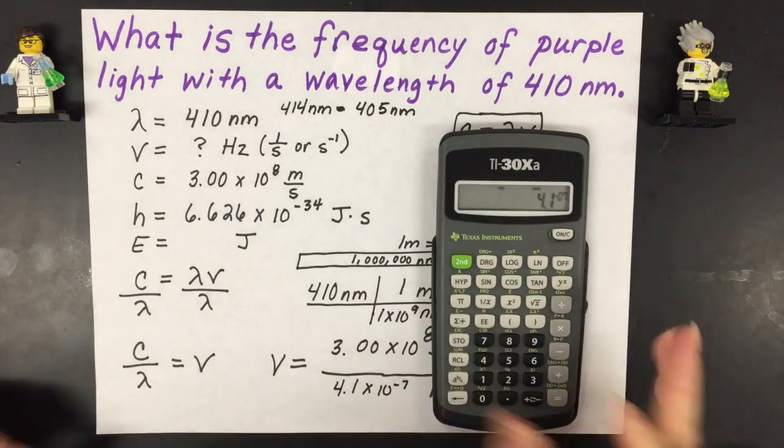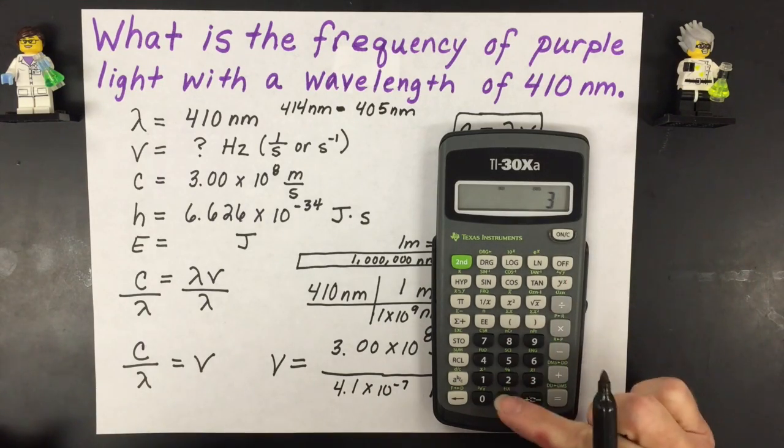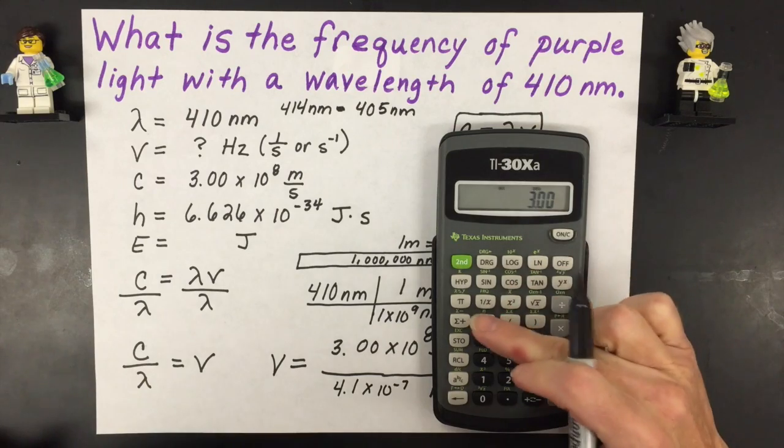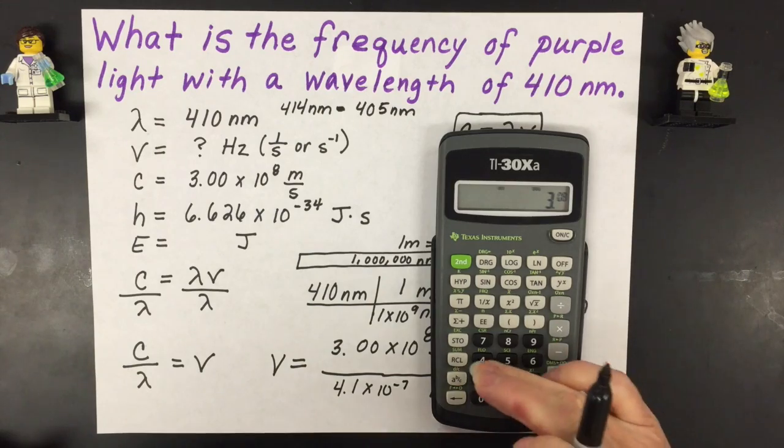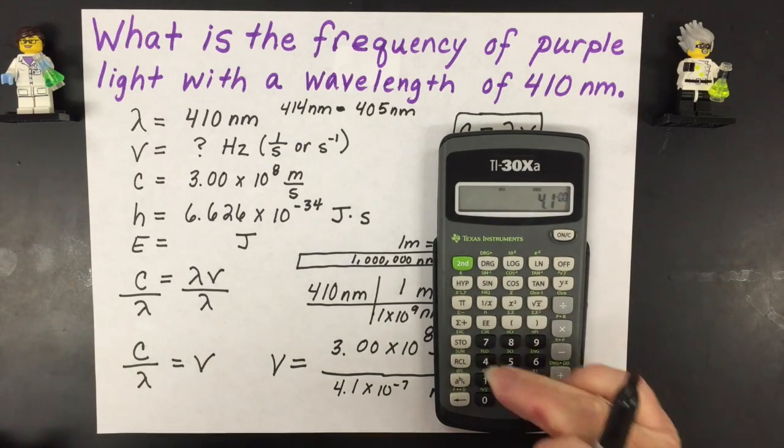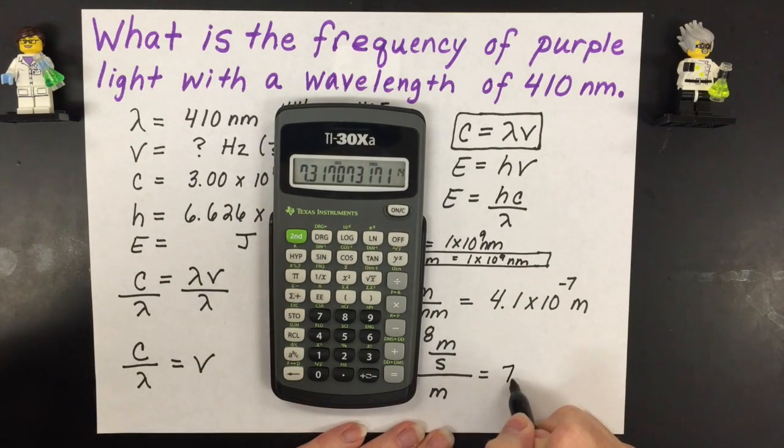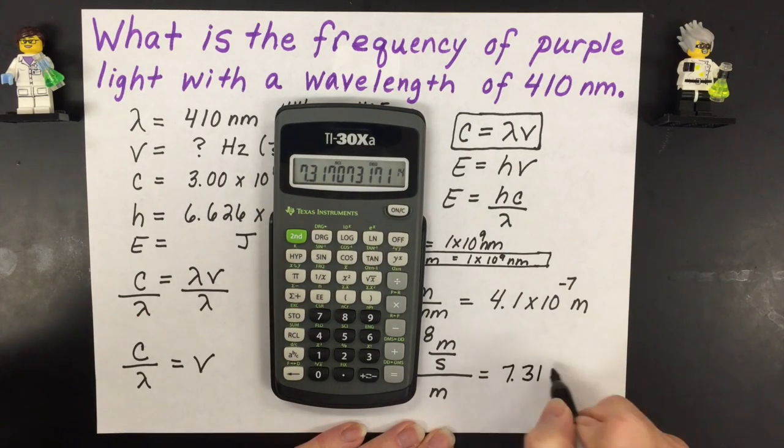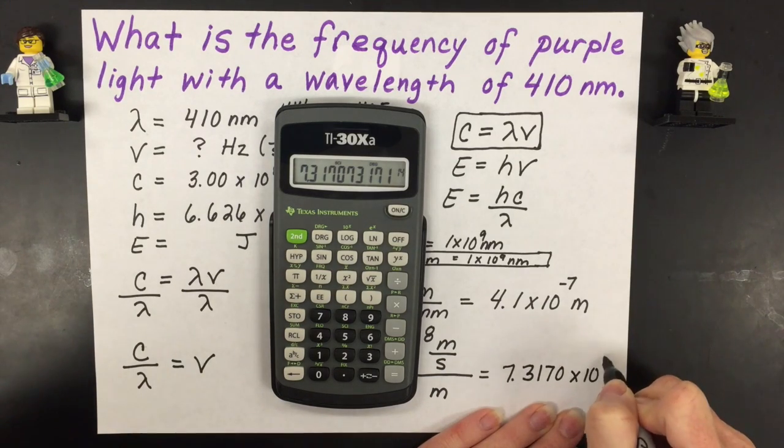Now when I plug this into my calculator I again have to use that exponential notation key correctly. You can type in the 3.00 EE 8 if you want to press it'll see that it'll just get rid of the zeros. Divided by 4.1 EE negative seven. And so my calculator says this is the answer. So 7.3170 I'll just keep that times 10 to the 14th.